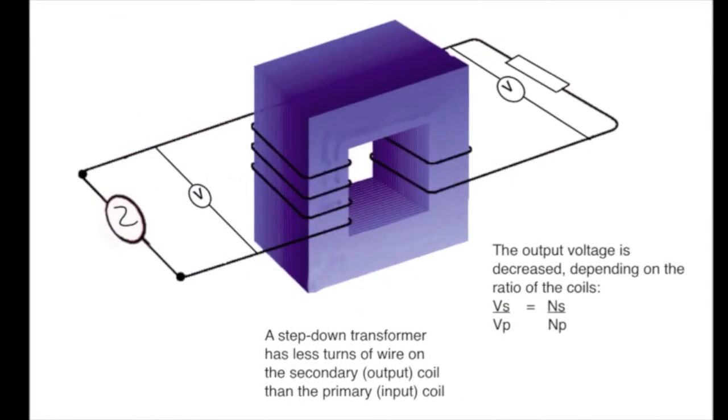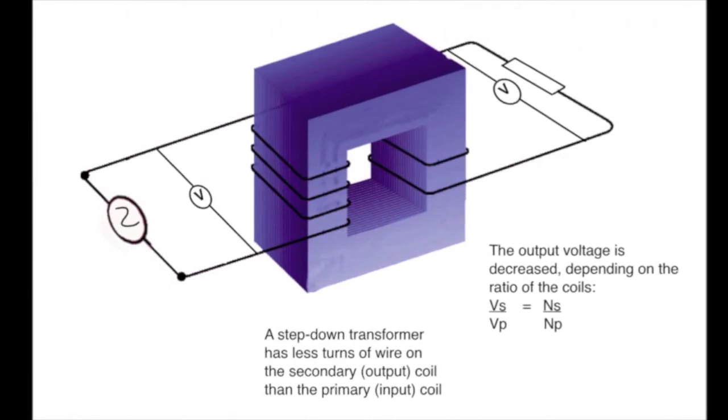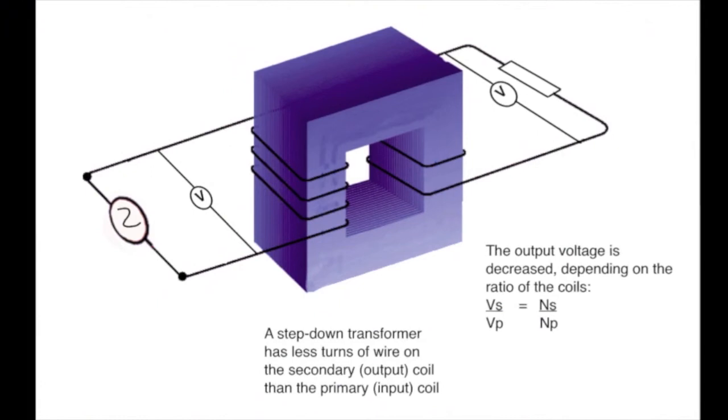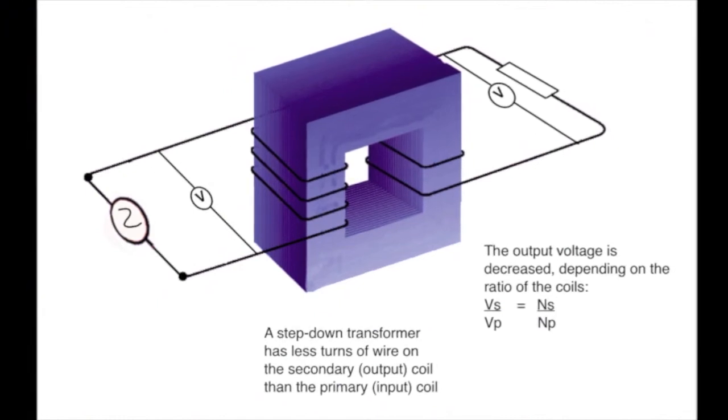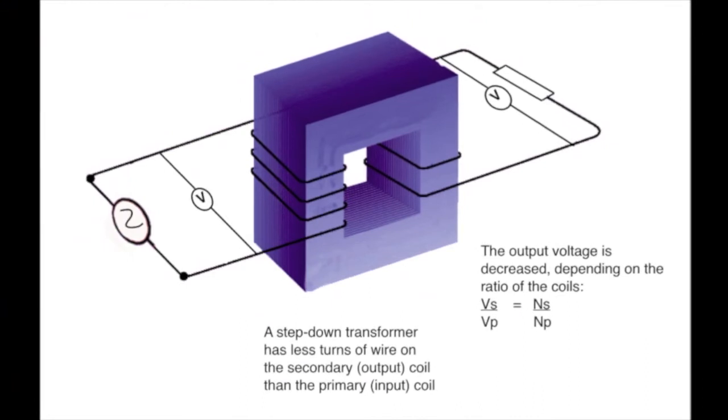The physics and maths of the step-down transformer are exactly the same. The ratio of the voltages, voltage on the secondary over the voltage of the primary, is exactly the same as the ratio of the number of turns of coil on the secondary to the number of turns on the primary.